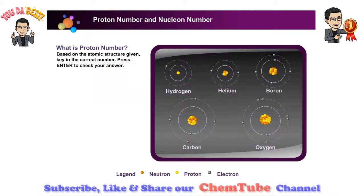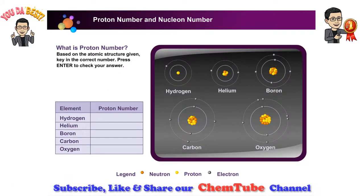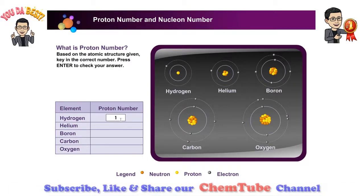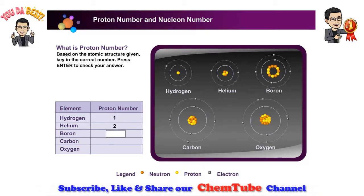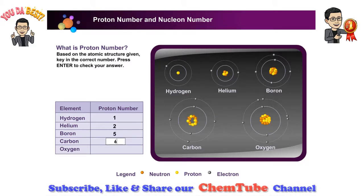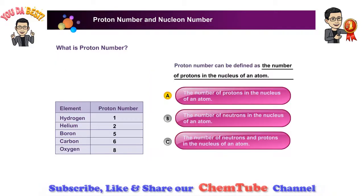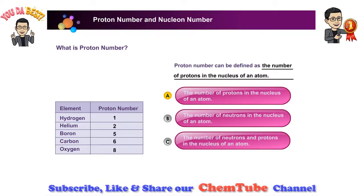Let us complete this table below. Based on the atomic structure given, key in the correct number. Proton number can be defined as the number of protons in the nucleus of an atom.